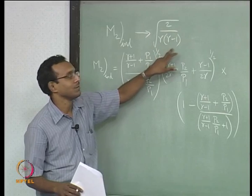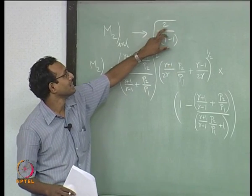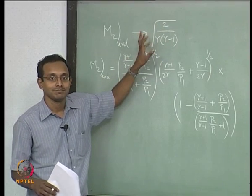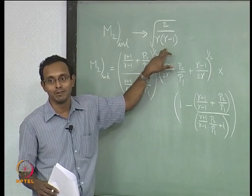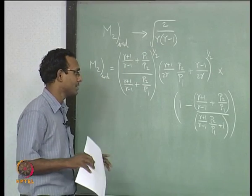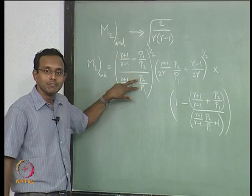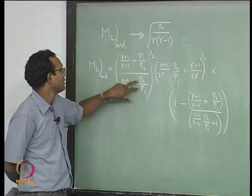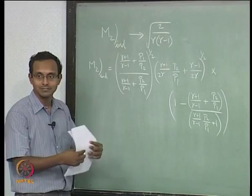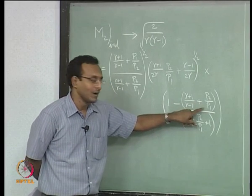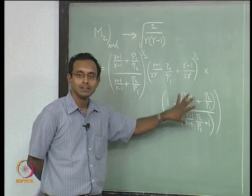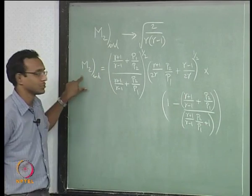This is a number less than 1 in the denominator, which will make the overall number more than 2, and this number is never more than 1.6, so I can tell this whole number is always more than 1. Square root of a number more than 1 is still more than 1 — that is why this induced Mach number is always supersonic. If I make P2/P1 equal to 1, then M2 induced becomes 0, because that term goes to 0.